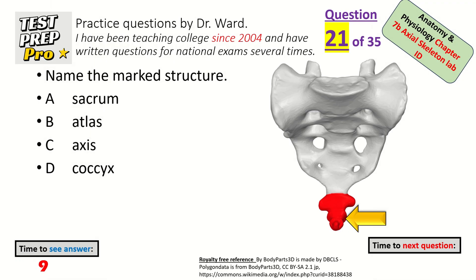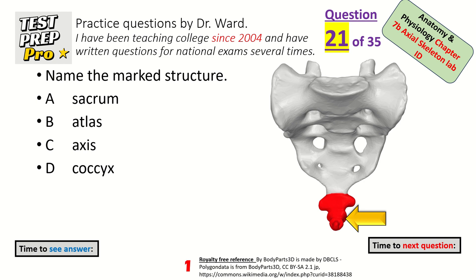Name the marked structure — this is a structure at the lowest part of the spine. The coccyx.